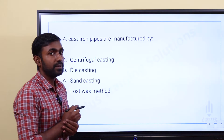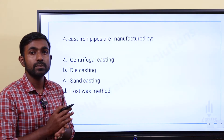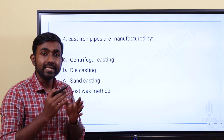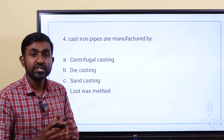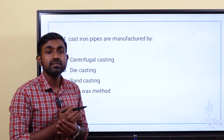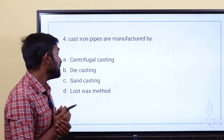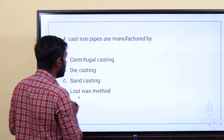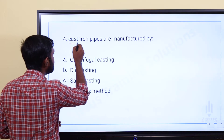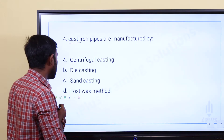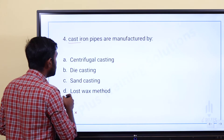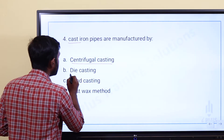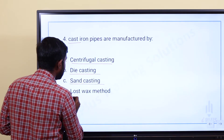Cast iron pipes are manufactured by which method? Option A: Centrifugal Casting, Option B: Die Casting, Option C: Sand Casting, Option D: Lost Wax Method.